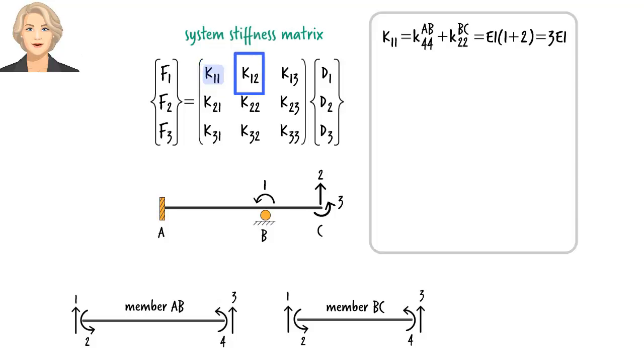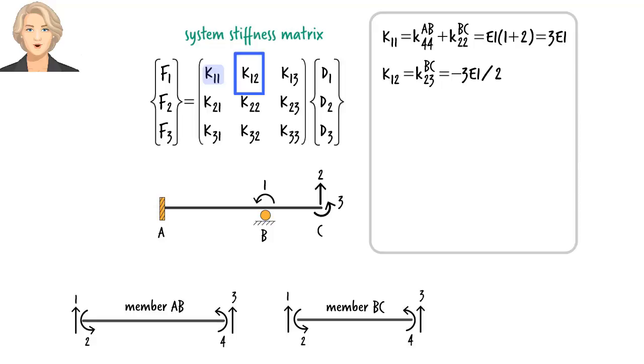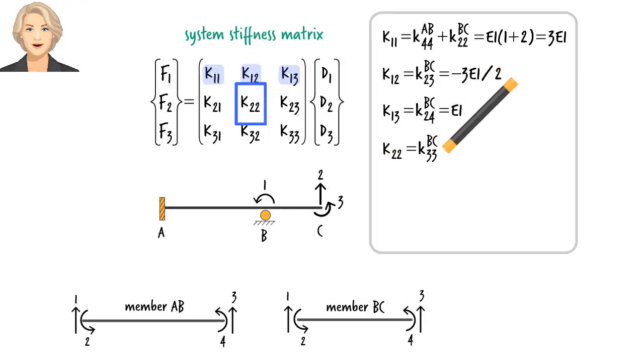In contrast, say for system pair F1, D2, segment AB makes no stiffness contribution since the pair does not have a corresponding pair in AB. That is the case since degree of freedom D2 is not located at an end of segment AB. Therefore, system K12 is defined using K23 of BC only. Since system pair F1, D2 corresponds to member pair F2, D3, we can write... Similarly, system pair F1, D3 corresponds to pair F2, D4 in BC. So, we can write... System pair F2, D2 corresponds to pair F3, D3 in BC. System pair F2, D3 matches pair F3, D4 in BC.